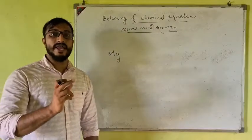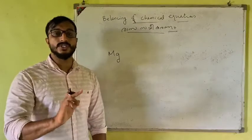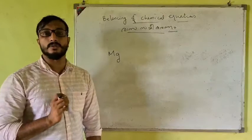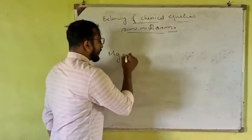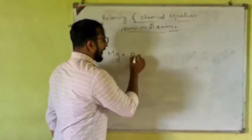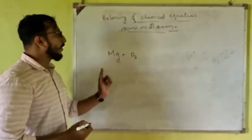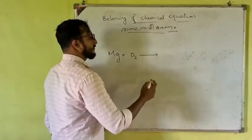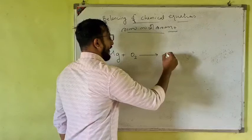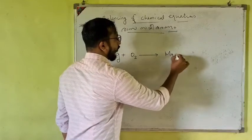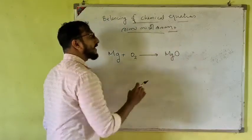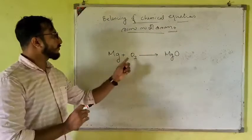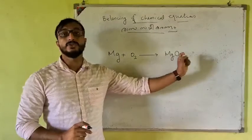It is a chemical reaction with oxygen. Oxygen always exists in the form of molecules, which gives O2. Magnesium oxide is the product — MgO is the product side.